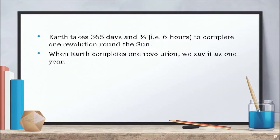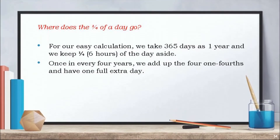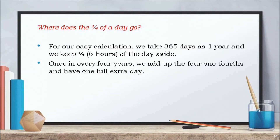Earth takes 365 days and one-fourth a day to complete one revolution around the sun. When earth completes one revolution, we say it as one year. For our easy calculation, we take 365 days as one year and we keep one-fourth a day, that is six hours, aside.